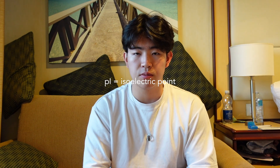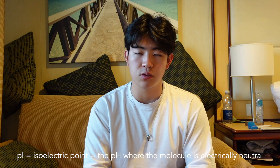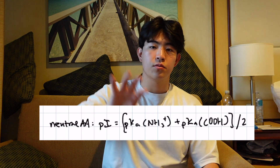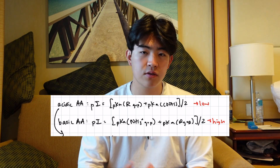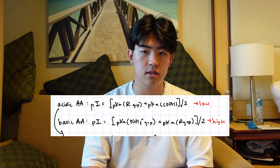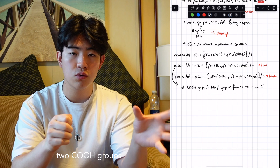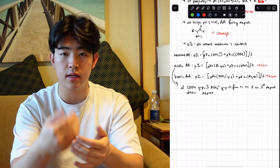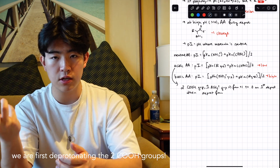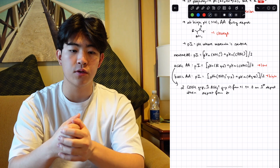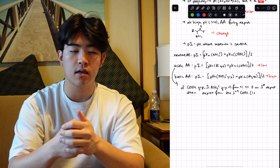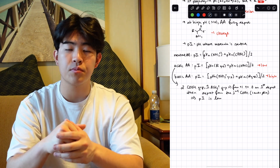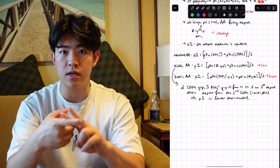Amino acids have a property called pI, the isoelectric point — the pH where the molecule is neutral. For neutral amino acids, pI is the average of the pKa of the carboxylic acid group and the amino group. But if there's an acidic or basic side chain, that changes things. For an acidic amino acid, there are two carboxylic acid groups, so as we go from low to high pH we deprotonate one -COOH and then the second -COOH instead of deprotonating the -NH3⁺ second. This means the pH at which we get a neutral molecule is much lower because we're averaging the two lower pKa's.